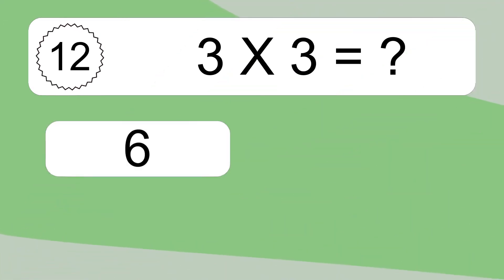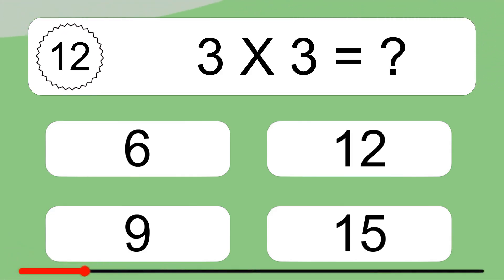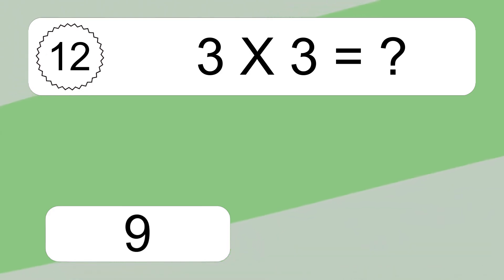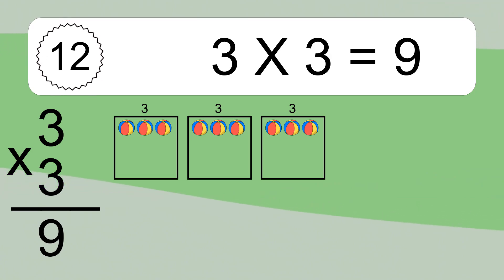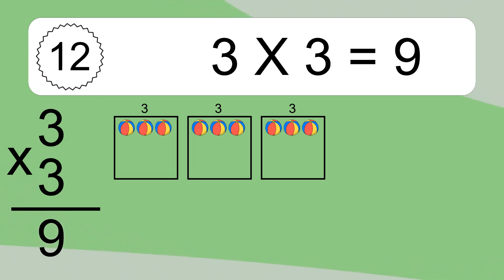3 times 3 equals what? 3 times 3 equals 9. We have 3 boxes, and each box has 3 colorful balls inside. If you count all the balls in all the boxes together, you will have 3 times 3 balls. This equals 9 balls.